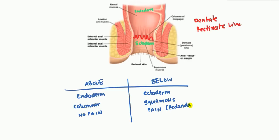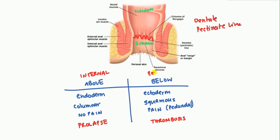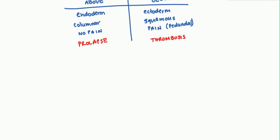When it comes to hemorrhoid pathology, a key feature is that hemorrhoids above the pectinate line oftentimes result in prolapse, whereas hemorrhoids below the pectinate line result in thrombosis. Hemorrhoids above the pectinate line are also known as internal hemorrhoids, and below the pectinate line are called external hemorrhoids.